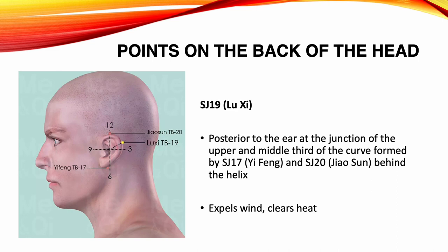Sanjiao 19, Luz Chi. Location: posterior to the ear, at the junction of the upper and middle third of the curve formed by Sanjiao 17 and Sanjiao 20 behind the helix. Functions: expels wind, clears heat. Indications: headache, tinnitus, deafness, ear pain, blurred vision, convulsions in infants.